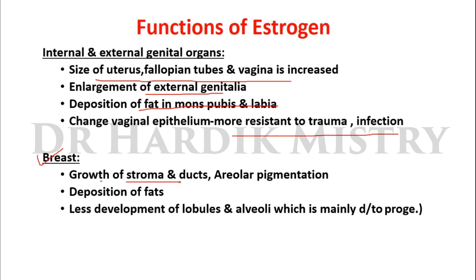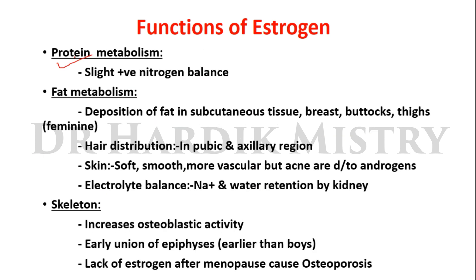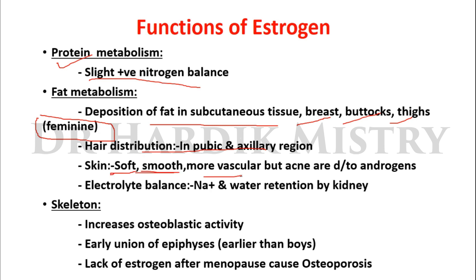There is also pigmentation of the areola and deposition of fat in the breast. Development of lobules and alveoli is under the effect of progesterone. Estrogen causes a slightly positive nitrogen balance in protein metabolism. In fat metabolism, there is deposition of fat in subcutaneous tissue, breast, buttocks, and thighs, producing feminine characteristics. Hair distribution occurs in the pubic and axillary region. Skin becomes soft and smooth. Electrolyte balance involves sodium and water retention by the kidney.